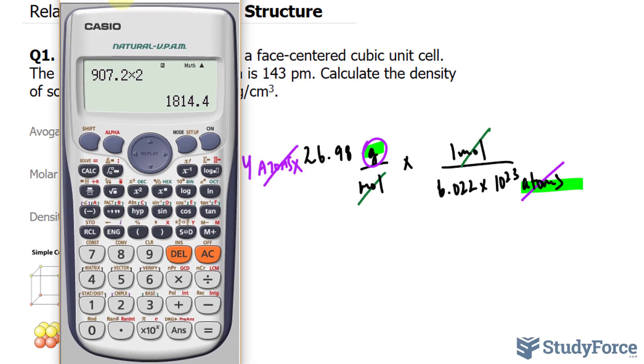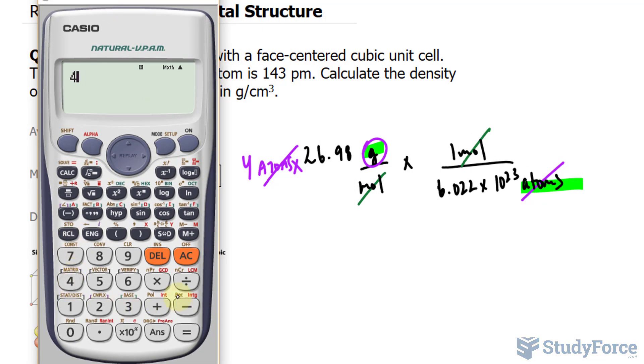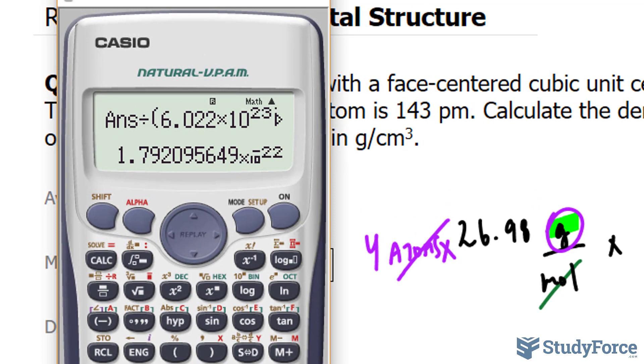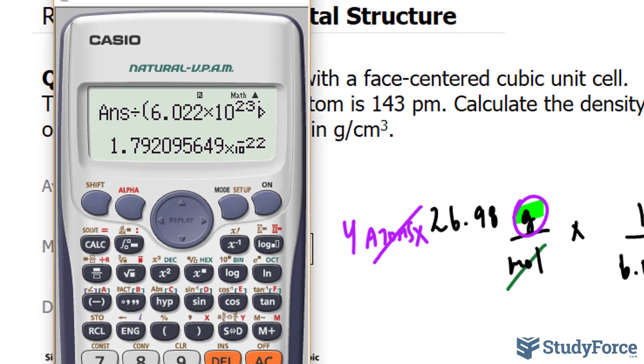So let's use our calculator. Our answer should be four significant figures: 4 times 26.98 times 1, divided by everything at the bottom, which is Avogadro's number.